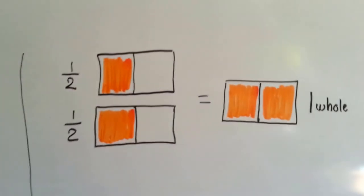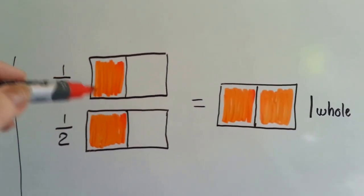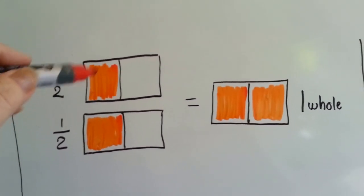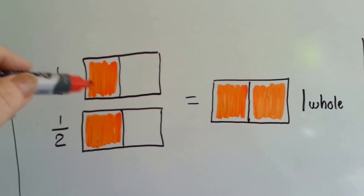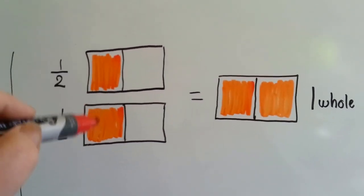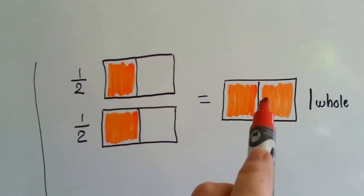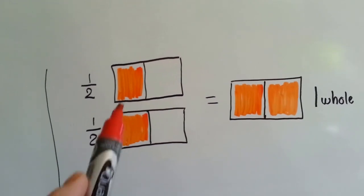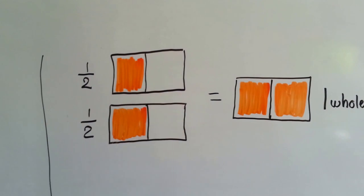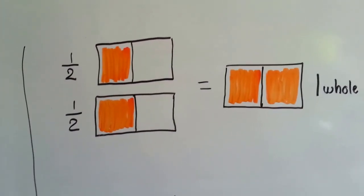Now let's look at these boxes. This is half of the rectangle. Here's the whole rectangle. We put a line down the middle and cut it in half and we colored orange into half of the rectangle. We did the same thing for this rectangle. If we put these two halves together, we'd have one whole rectangle. It would be the same thing as if we had colored this part orange — we would have ended up coloring the whole rectangle. So, two halves are equal to one whole.